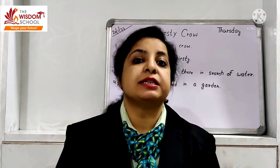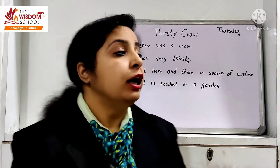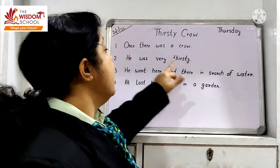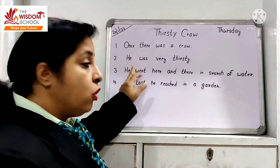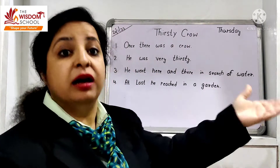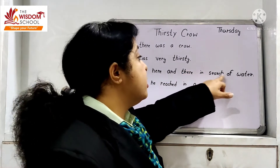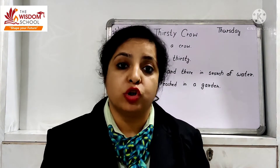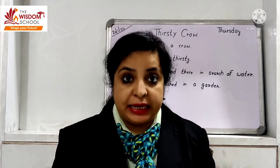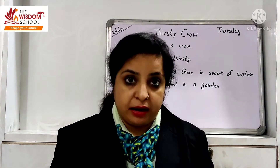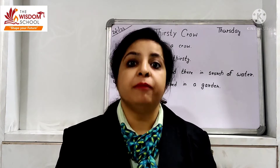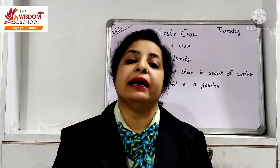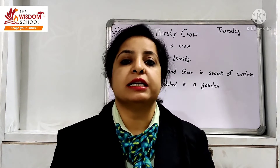He was very thirsty. Iske baad humari next line hai. Kya hai woh line? He went here and there. Pehle itna hi learn karo — He went. Woh gaya. Here and there. Idhar udhar. Kis liye gaya? In search of water. Kahi usko koi par water mil jaye — pani ki khoj mein. Toh humari third line kya hai? He went here and there in search of water.